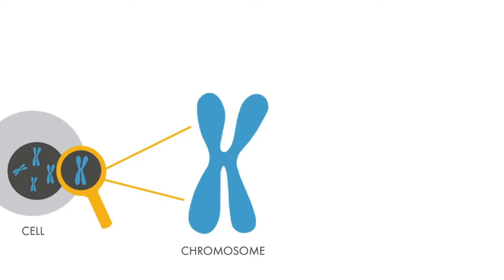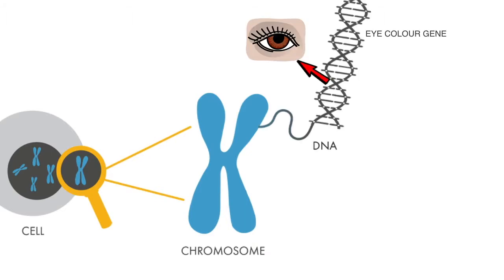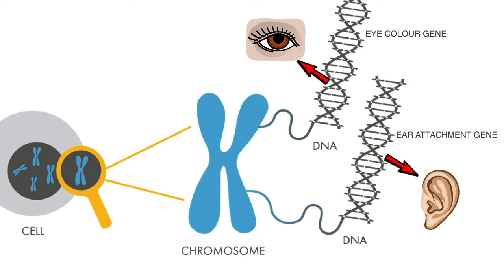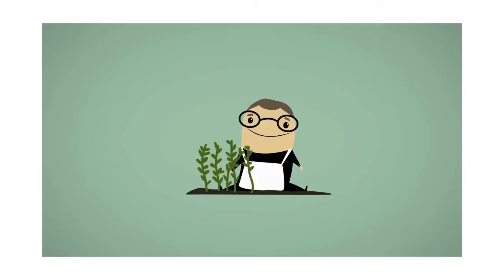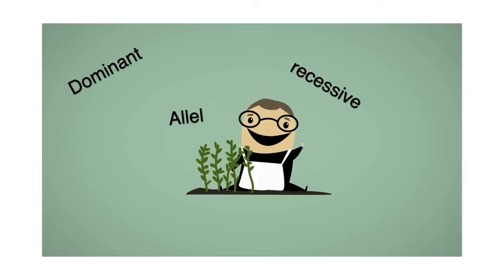By now you know that most of your traits, from your eye color to the shape of your earlobe, are influenced by genes found on your DNA. And that DNA is organized into chromosomes found in the nucleus of all your cells. You also know that those genes were passed on to you by your parents. But in the 1800s, this information was not known by anyone. But that did not stop an Austrian monk experimenting with pea plants from figuring out the rules by which genes are inherited.